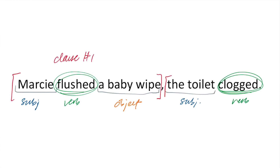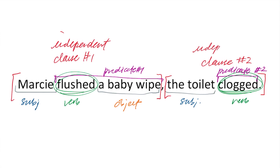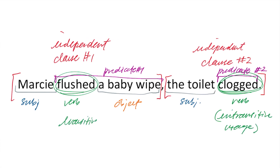Marcy is obviously the subject of the first verb, flushed. And you have to ask yourself, what did Marcy flush? Well, she flushed a baby wipe — so a baby wipe is the object of the first verb, flushed. Moving on to our second verb, the toilet is the thing that's clogging, so the toilet is the subject of the second verb. Because we have two different verbs, we need to think about which verb goes with which clause. Separating them into clauses, we get: Marcy flushed a baby wipe, and then the toilet clogged.